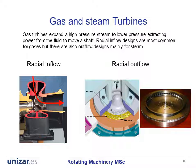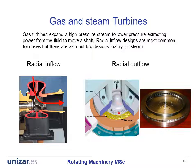Gas and steam turbines are power-producing devices that work on the principle of expanding a high-pressure fluid to lower pressure. There are both radial and axial designs. On this slide, radial designs are shown. They can be of the inflow type on the left and of the outflow type on the right. In radial inflow machines, the flow enters through the periphery and exits through the eye of the rotor. In radial outflow machines, the flow enters through the eye of the rotor and exits through the periphery. These radial outflow designs are mainly for steam applications.